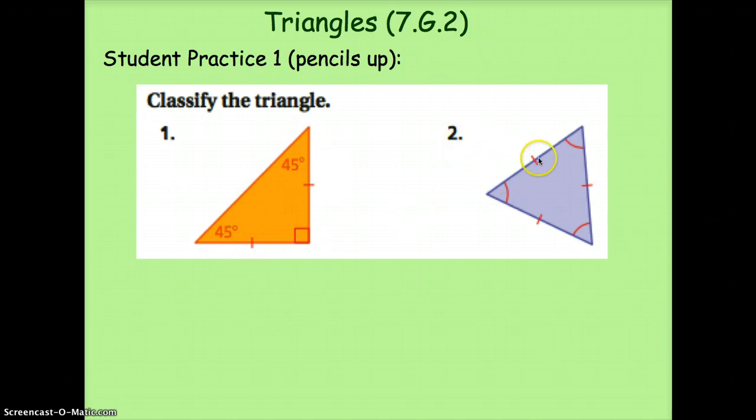Problem number two, notice all three sides are the same length because they all have the one mark in them. And all three angles are the same. All three angles are also all acute angles. So we know this must be an acute equilateral or equilangular triangle.